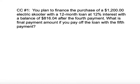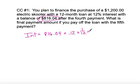The problem is: you plan to finance the purchase of an electric scooter with a 12-month loan at 12% interest. You have a balance of $816.04 after the fourth payment. What is the final payment if you pay off the loan with the fifth month? The first thing to do is calculate the interest solely on that previous balance of $816.04, multiplied by the interest rate for one month. What he owes just on his previous balance for one month is $8.16.